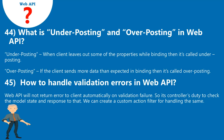Question 45: How to handle validation errors in Web API? Web API will not return an error to the client automatically on validation failure, so it is the controller's duty to check the model state and respond accordingly. We can create a custom action filter for handling the same.